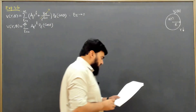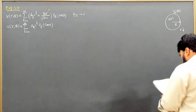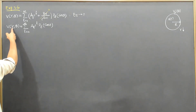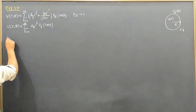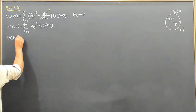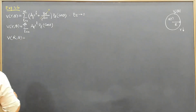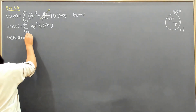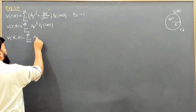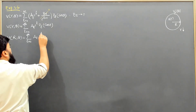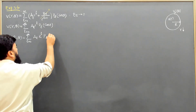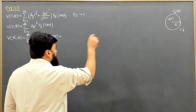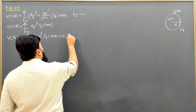When r equals capital R — that is, on the surface of the sphere — we have V(R,θ) equal to summation over L from 0 to infinity of A_L·R^L·P_L(cosθ). This must equal the specified potential V₀(θ) that we have been provided.